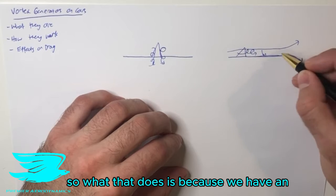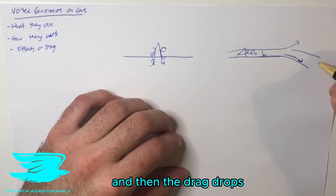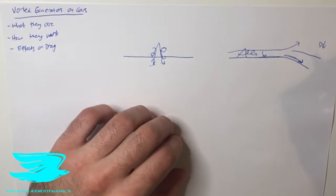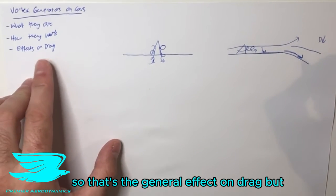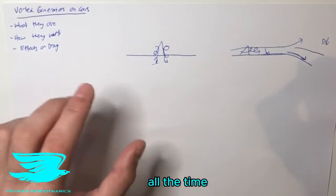So what that does is, because we have an attached flow, the wake is smaller, and then the drag drops. That's the general effect on the drag, but that doesn't necessarily mean that vortex generators are good all the time.